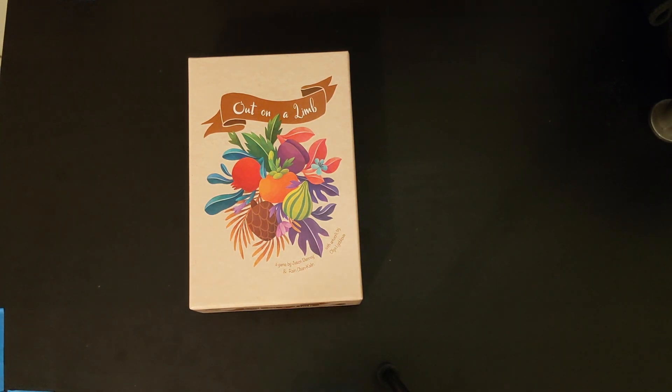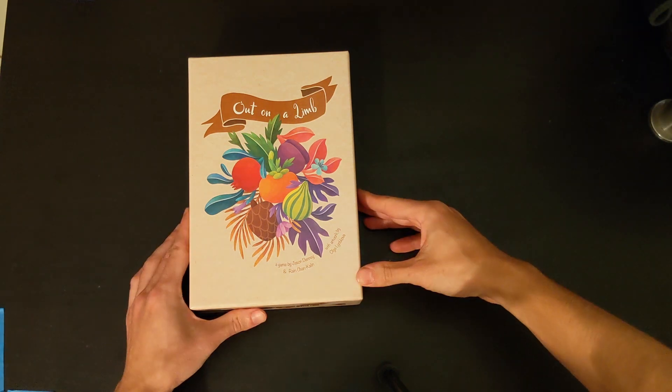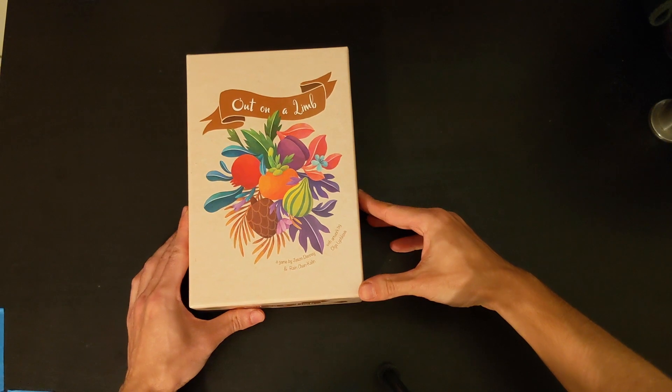This is How to Play Out on a Limb, a tabletop tile laying game by Drawing Board Games. I'm going to show you how to play this just by playing through it.